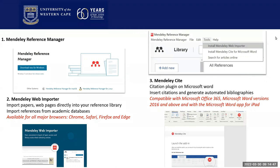The Mendeley web importer imports papers and web pages from different platforms and databases into your Mendeley library. It's currently supported by the four major browsers: Chrome, Safari, Firefox, and Edge. The Mendeley citation plugin integrates into Word to allow you to insert in-text citations and generate automated bibliographies. The compatibility of this plugin is currently with Microsoft Office 365 and Microsoft Word versions from 2016 and above.